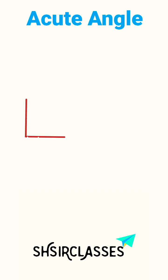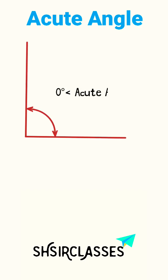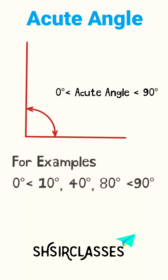if the angle is greater than 0 degrees and less than 90 degrees. For examples: 10 degrees, 40 degrees, and 80 degrees — all these angles are greater than 0 degrees and less than 90 degrees.